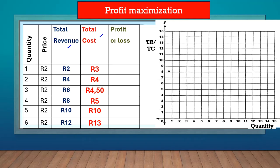If we want to check whether or not we have a profit or a loss, we just take the total revenue and minus the total cost. So two rands minus three rands gives us minus one rand — this is a loss because it's negative. Four minus four is zero, so no profit nor loss. Six rands minus four rand fifty gives us one rand fifty, so here we've made a profit because it's positive.